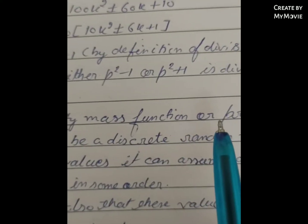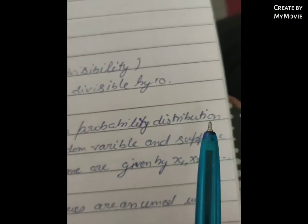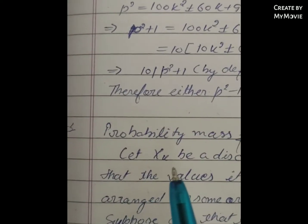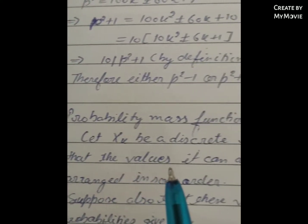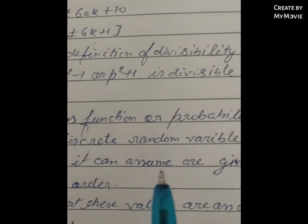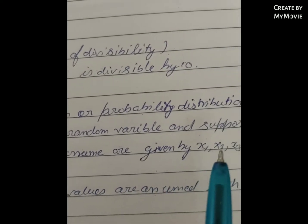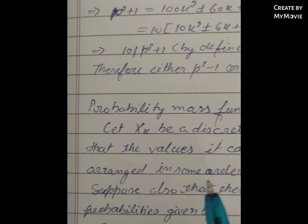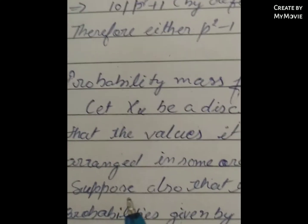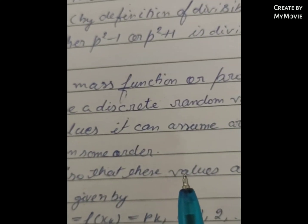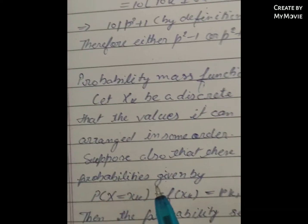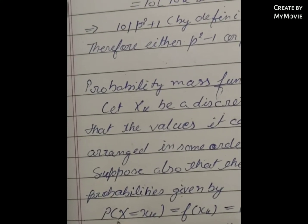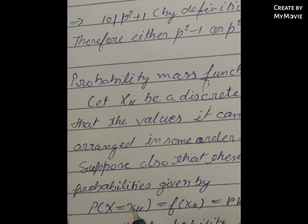Probability mass function or probability distribution: Let Xk be a discrete random variable and suppose that the values it can assume are given by x1, x2, x3 and so on, arranged in some order. Now suppose also that these values are assumed with probabilities given by P(X = xk).